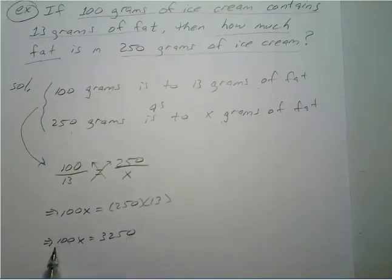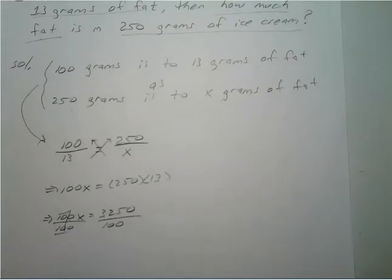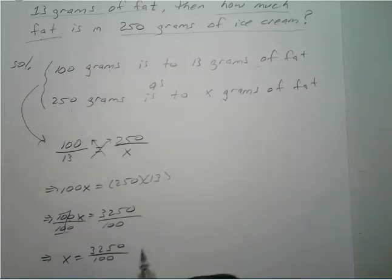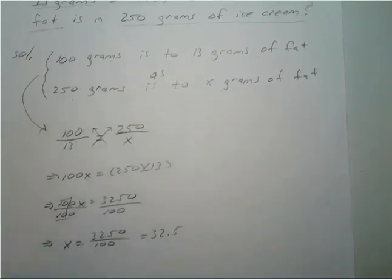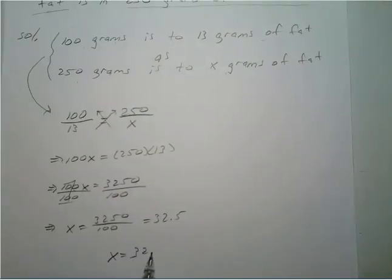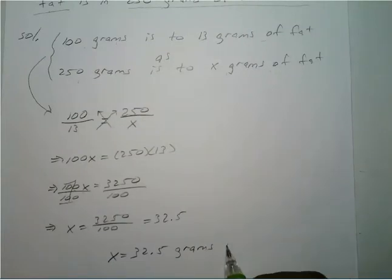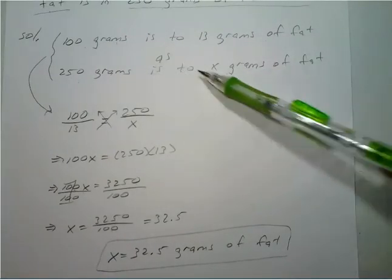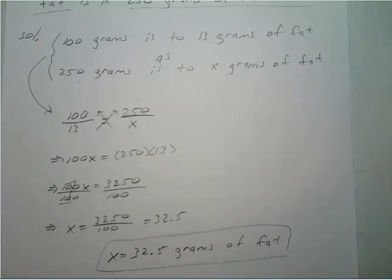So we divide both sides by 100 to isolate our unknown variable. Anything divided by itself is just 1, so X equals 3,250 divided by 100, which is 32.5. So X equals 32.5 grams of fat — meaning 250 grams of ice cream contains 32.5 grams of fat. Hopefully this made sense to you, and I will see you on the next video.